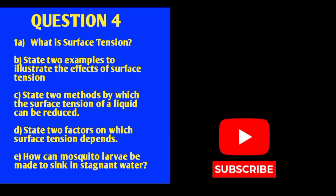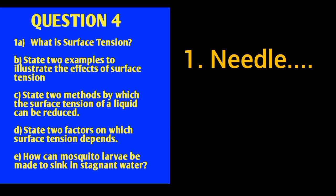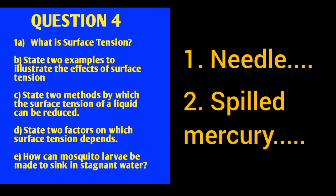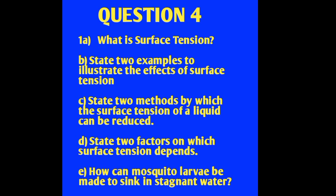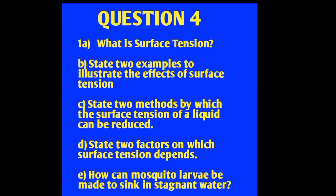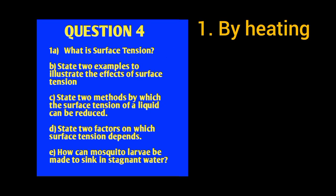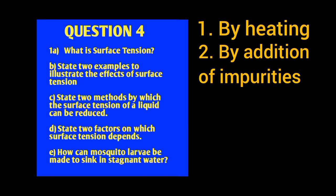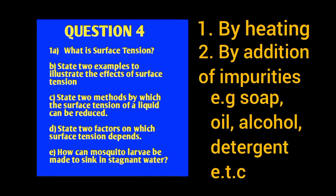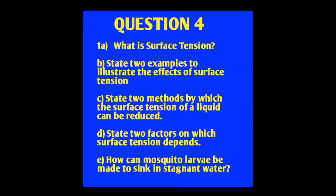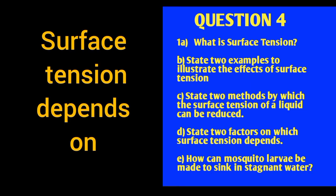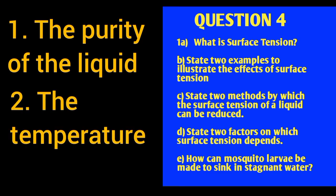Know at least two examples — needle gently placed on water surface, and spilled mercury on a glass surface. The surface tension of a liquid can be reduced by: heating, and by adding impurities such as soap, oil, alcohol, or detergents. Surface tension depends on two factors: the purity of the liquid, and the temperature of the liquid.